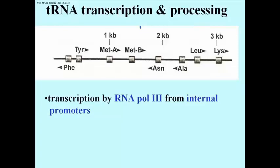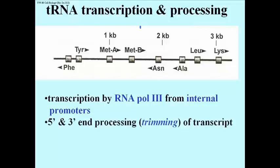Transfer RNAs are transcribed by RNA polymerase 3, again from internal promoters just like the 5S ribosomal RNA genes. Not shown here.